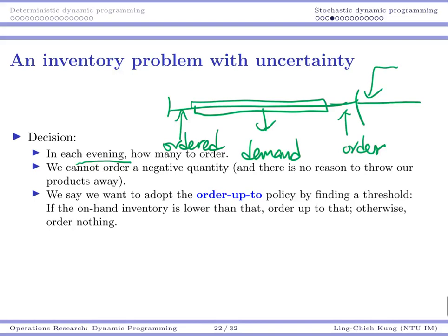In each evening we decide how many to order. We cannot order a negative quantity. There is no way for us to throw out our products. We can only order a non-negative number. You cannot throw your product away.